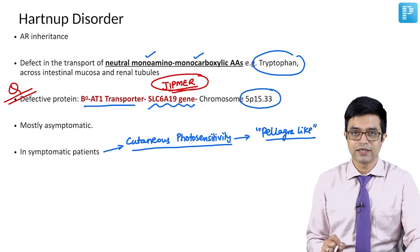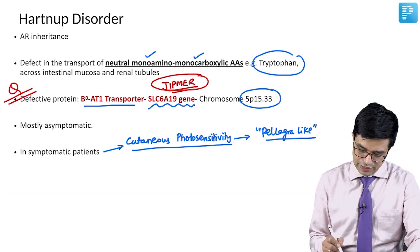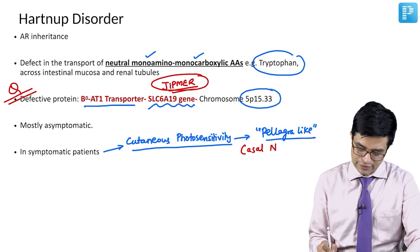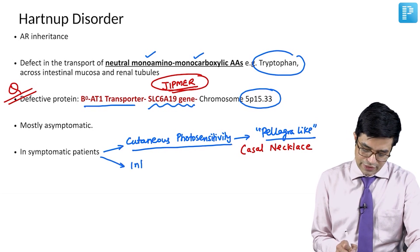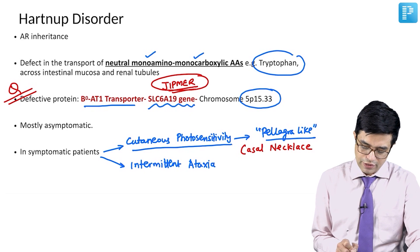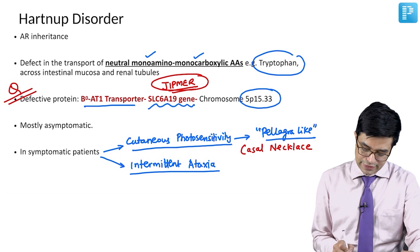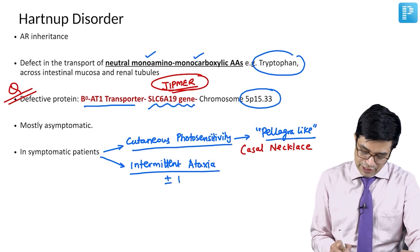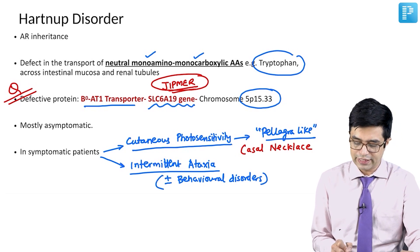Pellagra has a tendency to produce cutaneous hypersensitivity in photo-exposed parts, and the typical manifestation described is called the Casal necklace. The second feature in symptomatic patients is intermittent ataxia. Intermittent or episodic neurological features are very characteristic of the disease. Intermittent ataxia may be associated with intermittent behavioral disorders that appear during the episode and disappear when there is no CNS involvement.